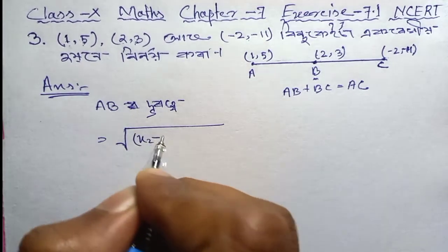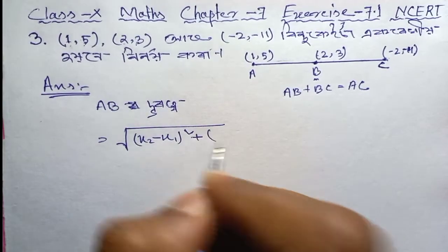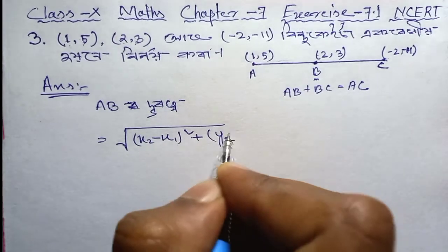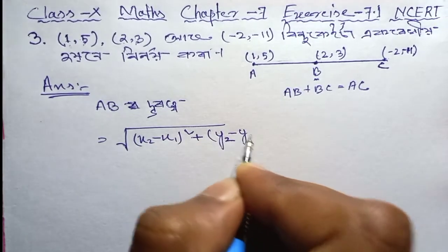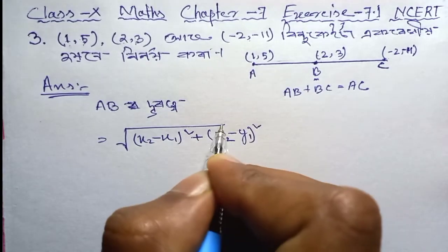The distance formula uses x2 minus x1, whole square, plus y2 minus y1, whole square — all under a square root.